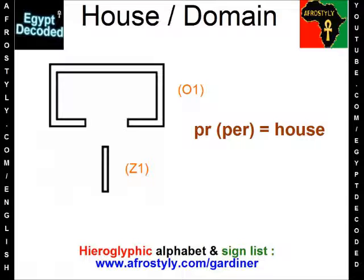You have the Gardiner Sign List in bracket O1 for the main sign or the main symbol which stands for PER, and underneath you have a single stroke which in this case serves as an ideogram. Therefore, it is possible that you see the symbol for PER — O1 once again in bracket — without the stroke underneath.